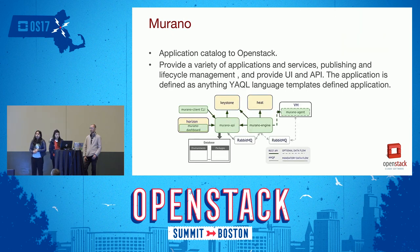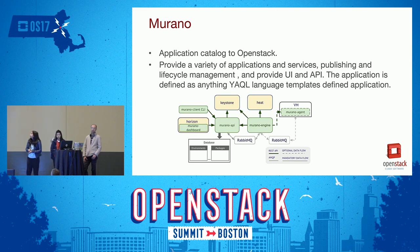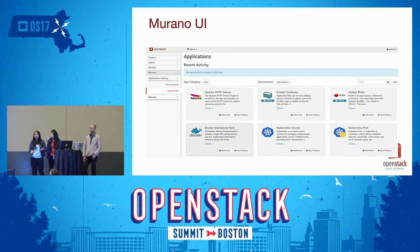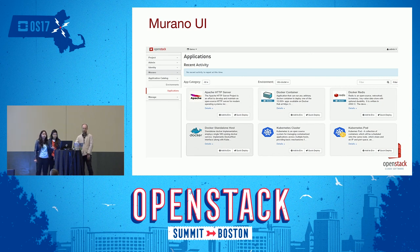The next project is Murano, the application catalog for OpenStack. Murano supports various applications — Kubernetes is one of them — and it has ready Docker applications. You can go to the Murano UI and see these applications, then run any kind of application with just a click. You don't have to worry about all the configuration in the background; Murano handles all configurations by itself and provides production-ready applications on the Murano UI.